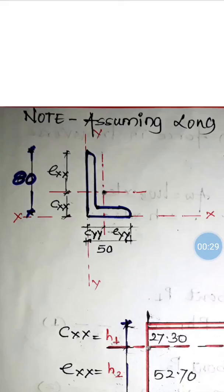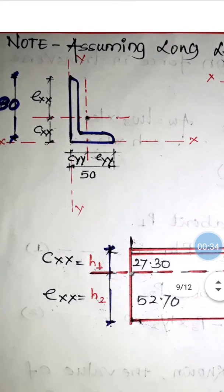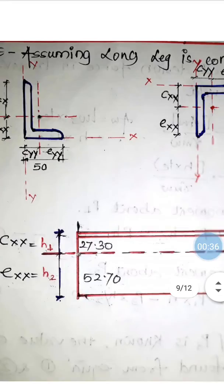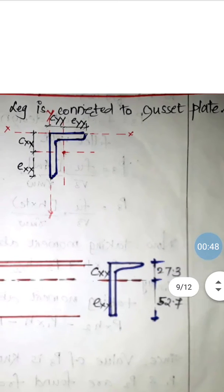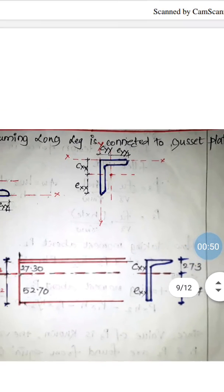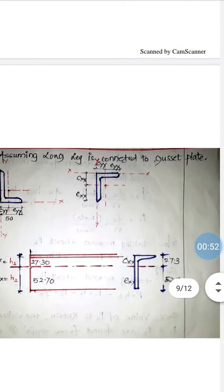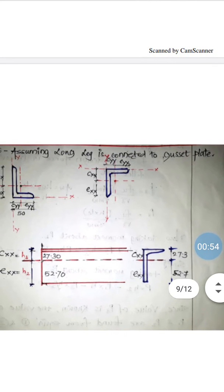We have an unequal angle ISA 80 by 50, where the 80 mm leg is connected to the gusset plate. The properties are: Cxx is 27.3 mm and Exx is 52.7 mm — these are nothing but h1 and h2. If you add both values you should get 80 mm; only then are the values taken from the steel table correct.